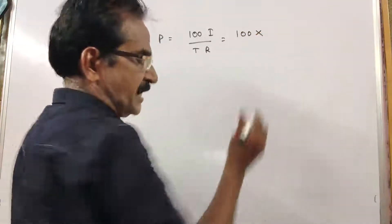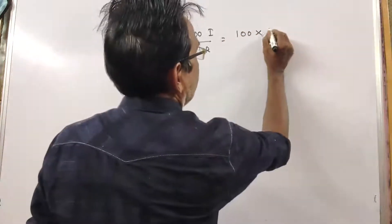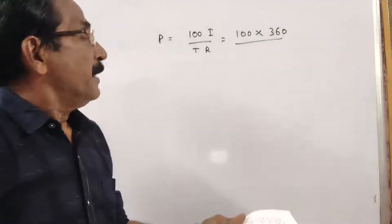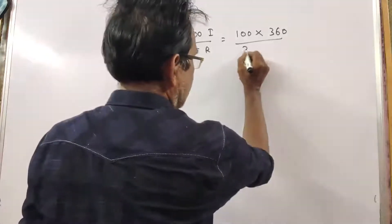100 into I is given. I is 360 rupees and T, in how many years? 3 years.